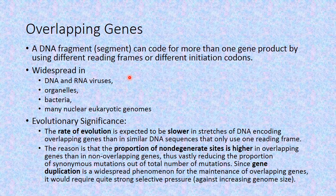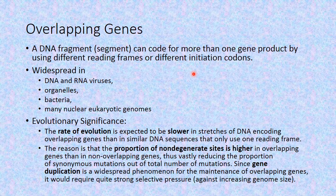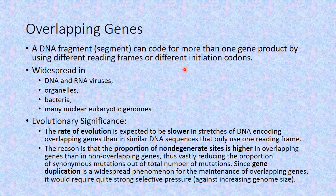Overlapping genes are basically DNA fragments which can code for more than one type of polypeptide, using different reading frames or different initiation codons. A triplet of three consecutive nucleotides forms a reading frame, where one genetic code is read for a particular amino acid, and proteins are sequences of amino acids — polypeptide sequences.